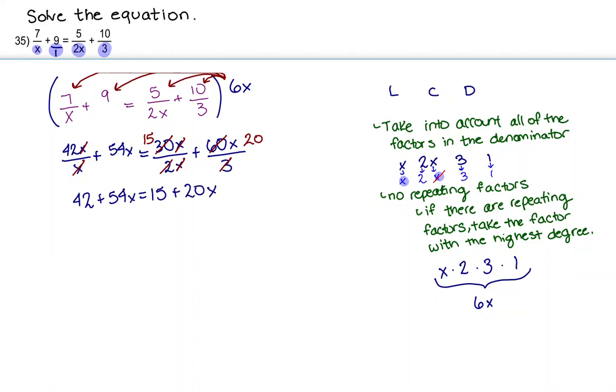Now I'm just going to combine like terms. So here I have 42 and 15 that can be combined. So I'm going to go ahead and subtract 15 from this side and 15 from this side. And that's going to give me 27. And I'm going to bring down the rest of my equation.